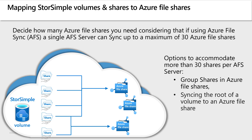Azure file shares do not exist in volumes, and so backups or snapshots, as well as storage tier selection, are done at the share level. This provides finer granularity of control for snapshots and other functions. StoreSimple volumes are also the level at which performance is limited, whereas with Azure file shares, performance limits are per share. This allows for much greater scope in scaling performance with Azure file shares. If you are planning to use Azure File Sync, note that each Windows Server running the AFS agent can sync a maximum of 30 Azure file shares.